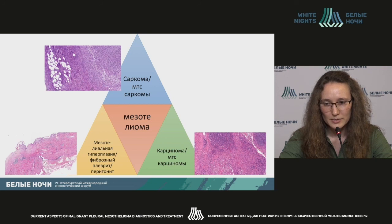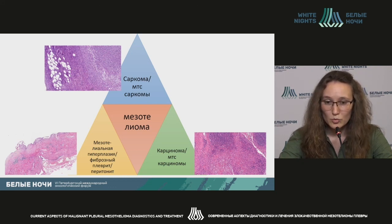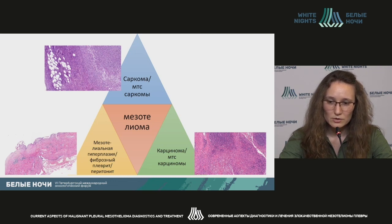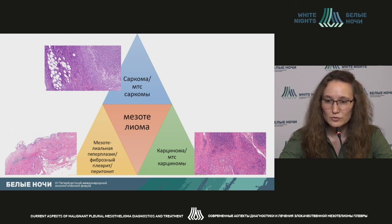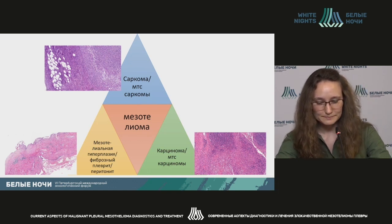To summarize, mesothelioma is a multifaceted entity that requires differential diagnosis regarding both reactive non-tumor processes and different epithelial tumors. In a number of cases, sarcomas — which are also very diverse — must also be considered. Hence, the morphologist faces a vast differential diagnosis. We are limited regarding the specificity of markers, and we cannot do well without the assistance of clinicians and radiologists. Effective teamwork is necessary for good results in diagnosing patients with such difficult neoplasms.